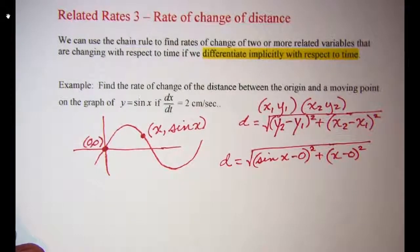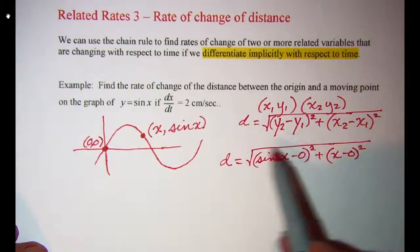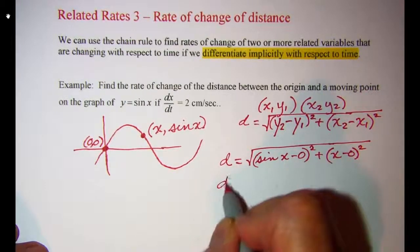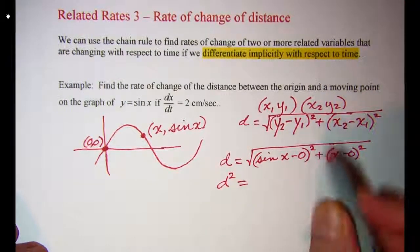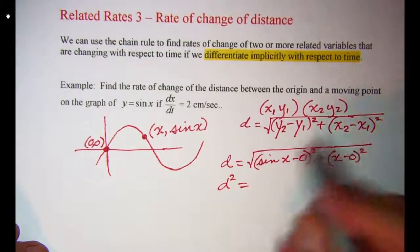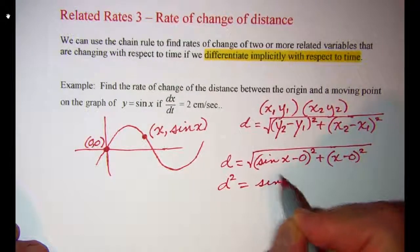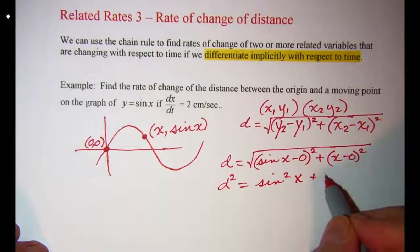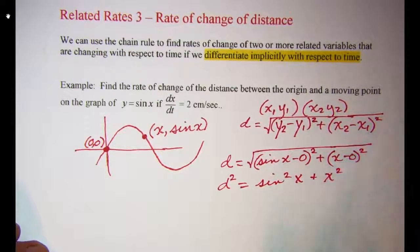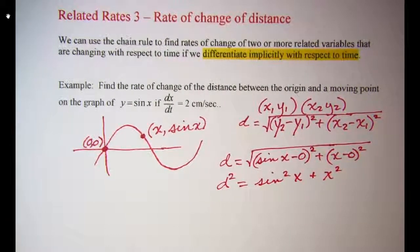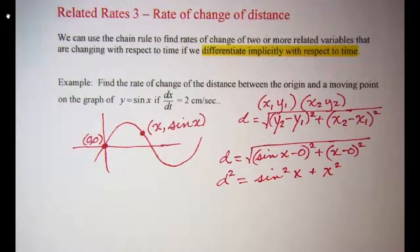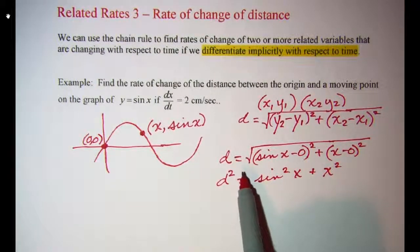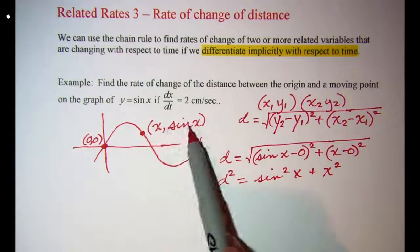Now to differentiate this, I'm going to square both sides first to get that radical off. So I have d squared equals, which simplifies to sine squared x plus x squared. This is our equation which relates our variables.